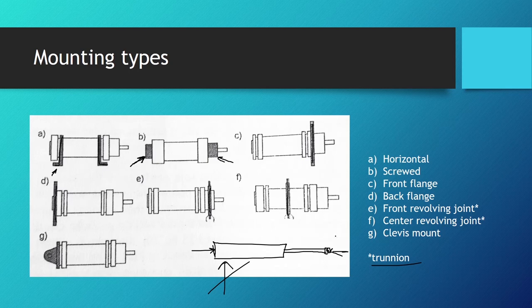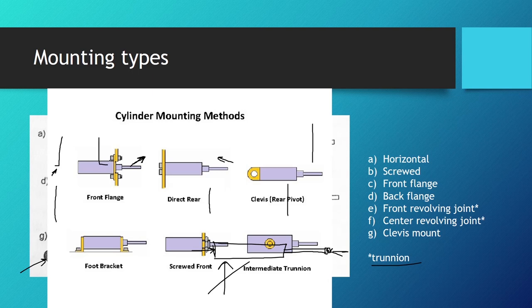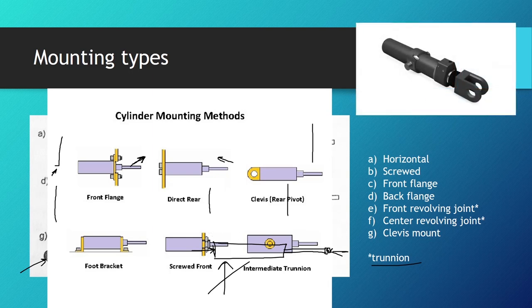Here we can see more mounting types: the front flange, the direct rear flange, the clevis or the rear pivot, the foot bracket or the horizontal, the screwed in front, and the intermediate trunnion, which is basically the center revolving joint. It lets the hydraulic cylinder rotate from this point. Here we can see the trunnion mount and how it looks like on a hydraulic cylinder.